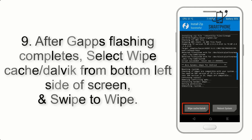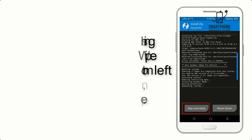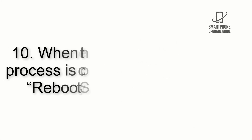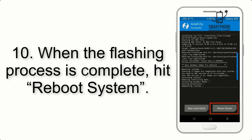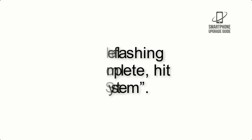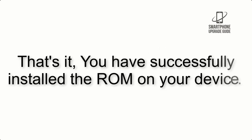Step 9: After GApps flashing completes, select Wipe Cache and Dalvik from the bottom left side of the screen and swipe to wipe. Step 10: When the flashing process is complete, hit Reboot System. That's it — you have successfully installed the ROM on your device.